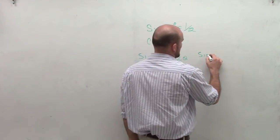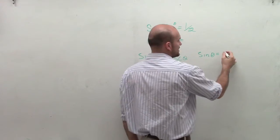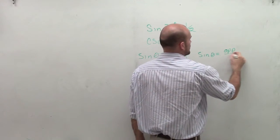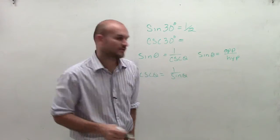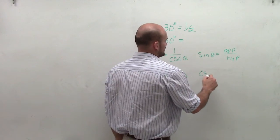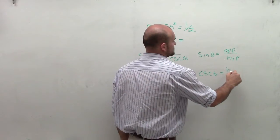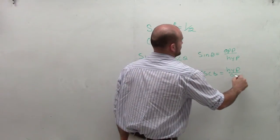Therefore, if sine of theta we represent, remember, as opposite over hypotenuse, right? So if sine of theta is opposite over hypotenuse, then the cosecant of theta is going to be hypotenuse over opposite, right?